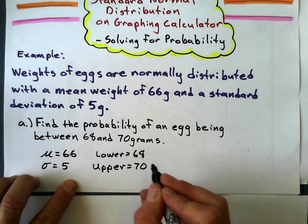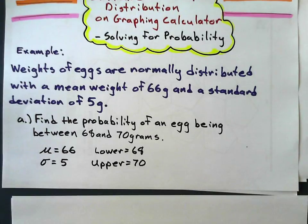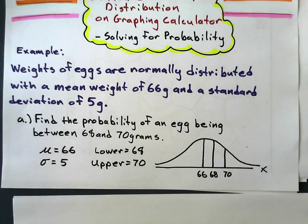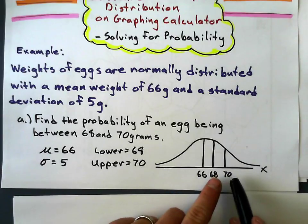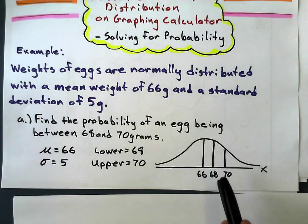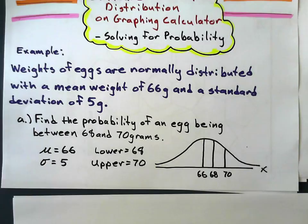Now I still draw a normal curve just to get an idea of what's going on for the problem. Even with the graphing calculator, I draw my standard normal bell curve, draw the mean and my two values of 68 and 70, and I shade the part of the probability that I'm looking for, which is right there.